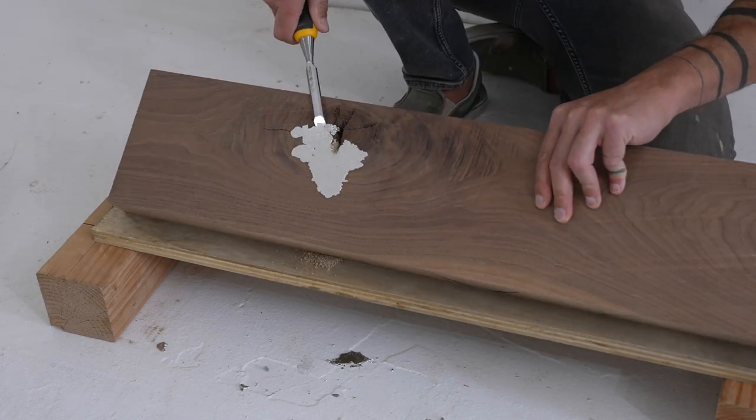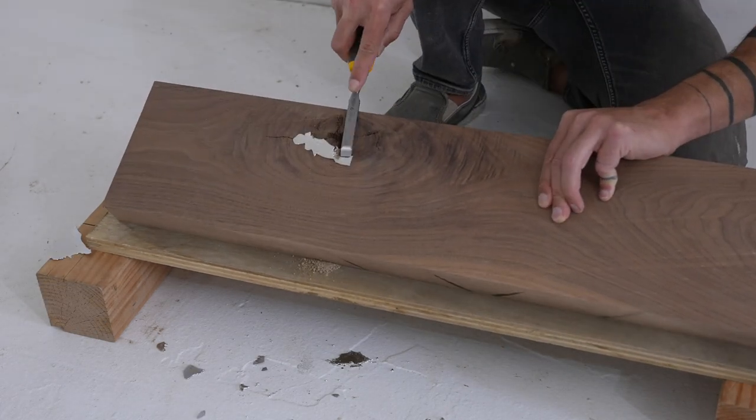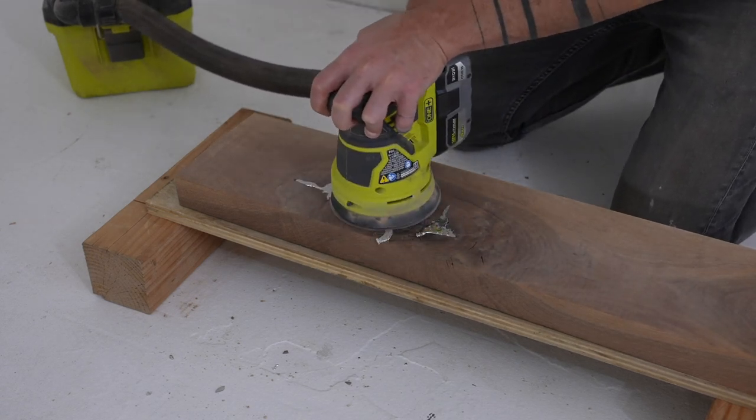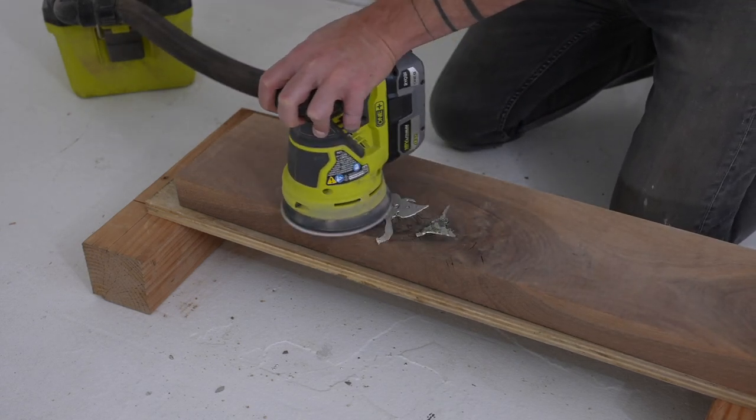This alloy is softer than aluminum but definitely harder than the walnut. So I just threw on an 80 grit pad and sanded it down flush to the wood. I'll clean it up with some finished sanding later.